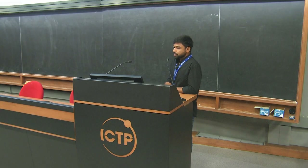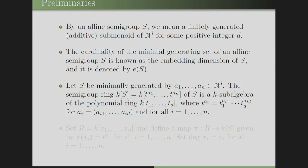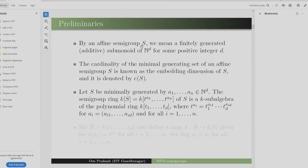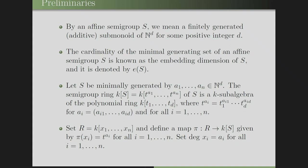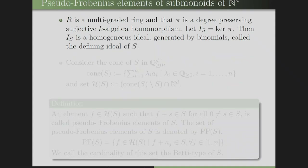Let S be a semi-group minimally generated by A_1 up to A_N, which are vectors in N^D. The semi-group ring K[S] is a subalgebra of the polynomial ring generated by the monomials T^{A_i}, where T^{A_i} is defined accordingly. Setting R equal to the polynomial ring and defining a map π from R to K[S] by π(X_i) = T^{A_i} with degree X_i = A_i, this gives a multi-graded ring where π is a degree-preserving surjective K-algebra homomorphism. The kernel of π, denoted I_S, is a homogeneous ideal generated by binomials, called the defining ideal of S.